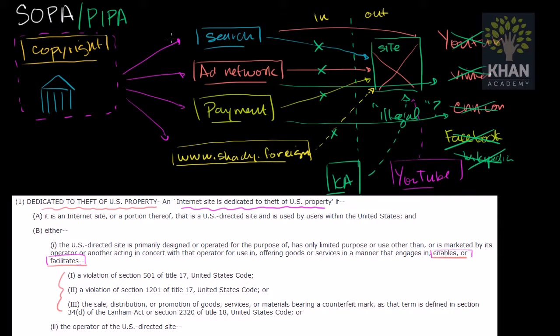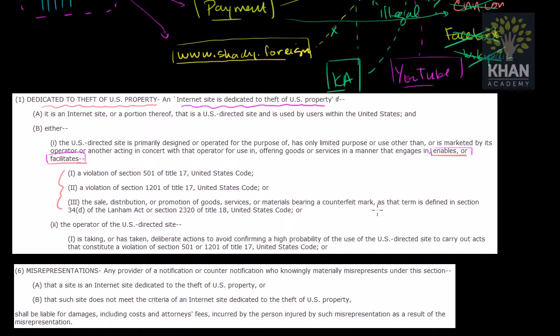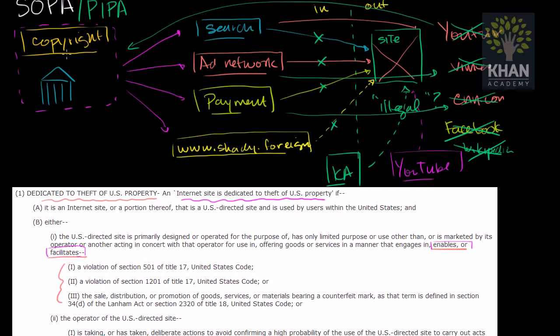And you'd say okay, that's bad enough, but couldn't these people say hey look, you wrongfully took us down, we're going to sue you now. Well to see that they can't, and to see how one-sided this legislation is, notice the threshold for being able to sue back: if you misrepresented a violation, the only way you are held accountable is if you knowingly materially misrepresented the violation. So if the copyright holder just says, oh I think someone on YouTube,